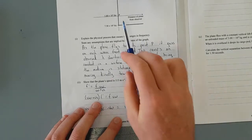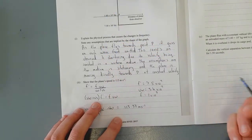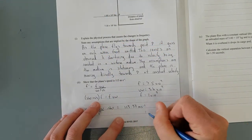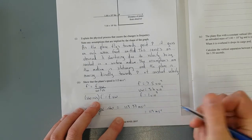And because we have 3 significant figures, so everything needs to be 3SF. So that is going to be equal to 113 metres per second.